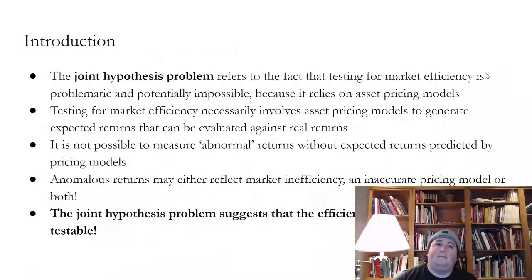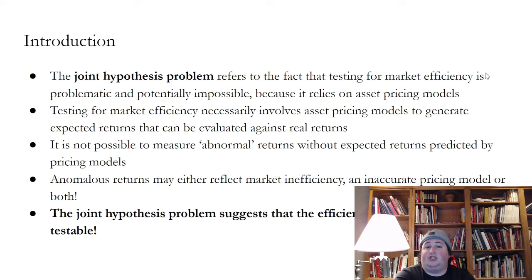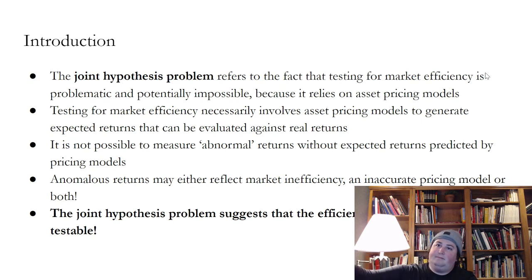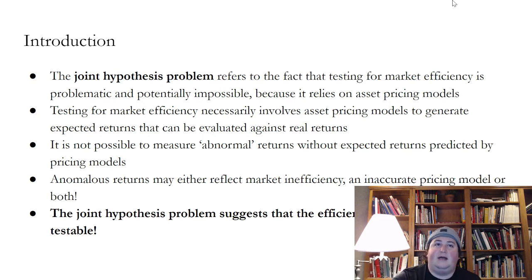To wrap up, the joint hypothesis problem is that it's very difficult to test the EMH because we don't have a rock solid asset pricing model that can tell us what expected returns should be. Without a rock solid model of expected returns, when we see what returns actually are, we don't know how those compare to what the expected return should have been — because we don't know if the expected return model is wrong, or if the efficient market hypothesis is wrong, or if both are wrong. Thanks so much for listening and I'll see you in the next video.